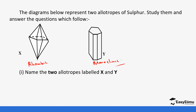In some exam questions you may be asked to draw the allotropes or explain their properties, so be ready for that. You may also be asked to explain the heating of sulfur and the steps we discussed. This brings us to the end — in the next lesson we will look at the chemical properties of sulfur. See you then.